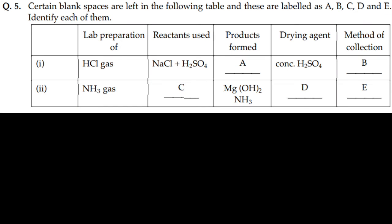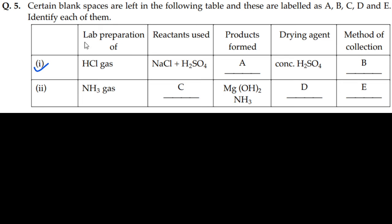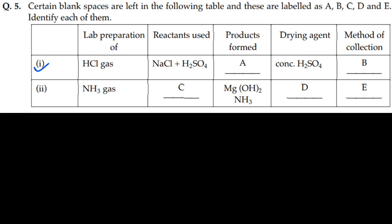Next question - certain blank spaces are left in the following table and these are labeled as A, B, C, D, E. Identify each of them. First, HCl gas lab preparation. Reactants used means NaCl + H₂SO₄, product is A.